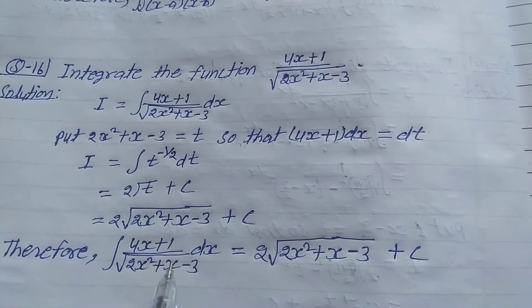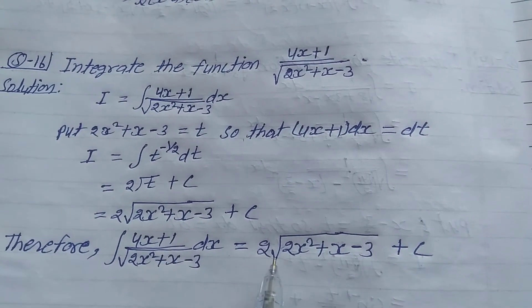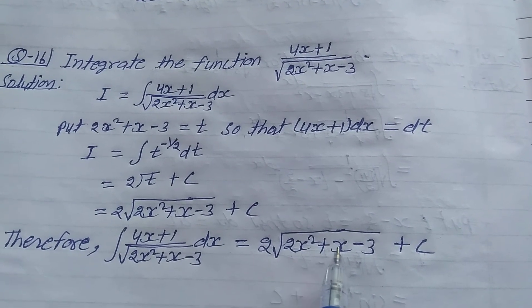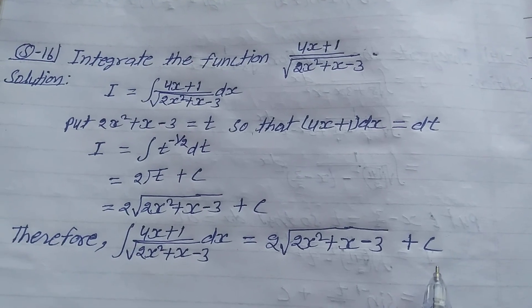Therefore, integration of (4x + 1) upon root of (2x² + x - 3) dx equals 2√(2x² + x - 3) + C. That is the solution.